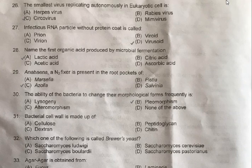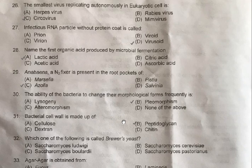Question 31: Bacterial cell wall is made up of — A: Cellulose, B: Peptidoglycan, C: Dextrin, D: Chitin. The correct one is B, Peptidoglycan. Peptidoglycan is a polymer. The monomers are NAM and NAG. NAM stands for N-acetyl muramic acid. NAG stands for N-acetyl glucosamine.